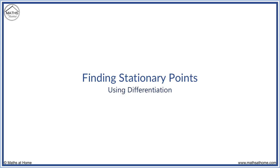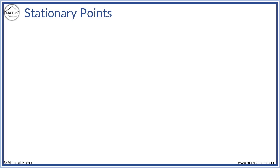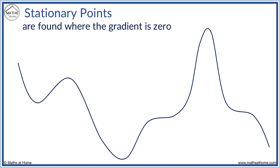In this lesson we learn how to find stationary points. Stationary points are specific points on a graph. Stationary points are found where the gradient is zero.